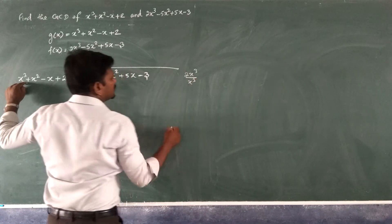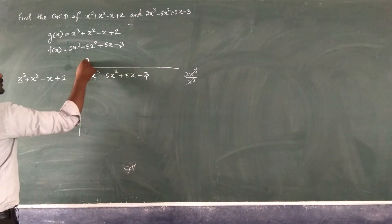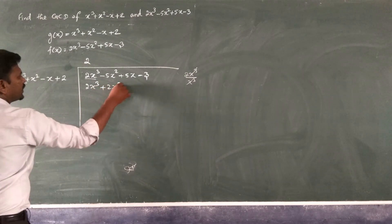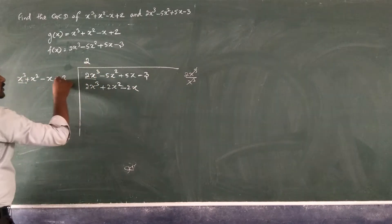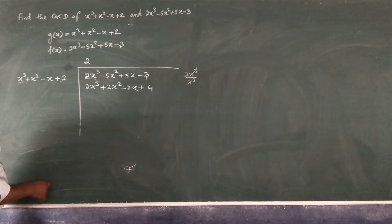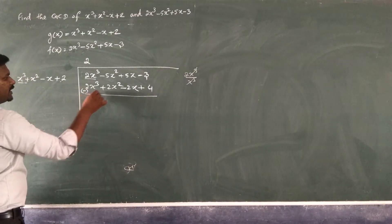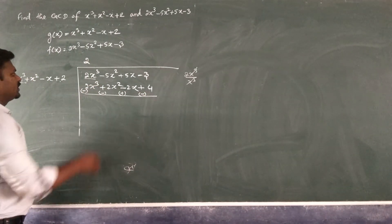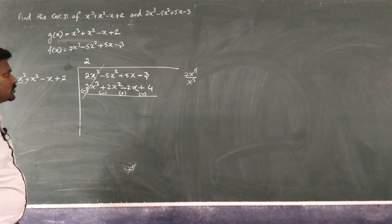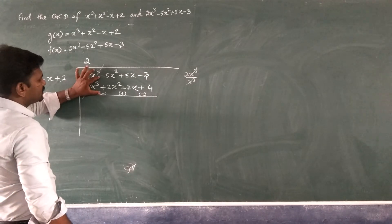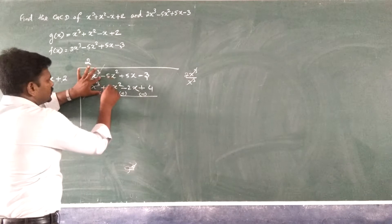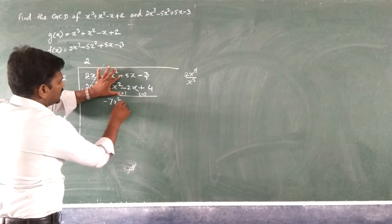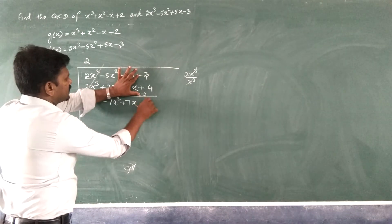Take the first term of both polynomials: 2x³ divided by x³ gives 2. Multiply 2 by the divisor: 2x³ + 2x² - 2x + 4. Then change all symbols to the opposite. After cancellation, we get: -7x² + 7x - 7 as the remainder.